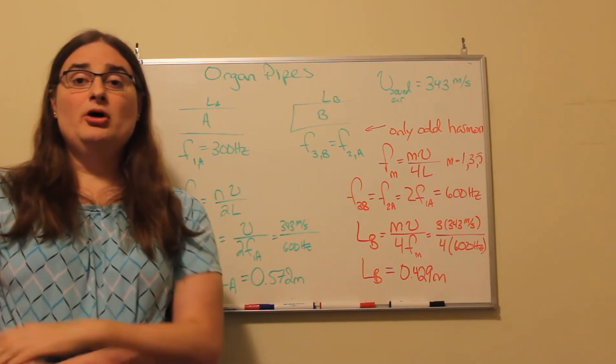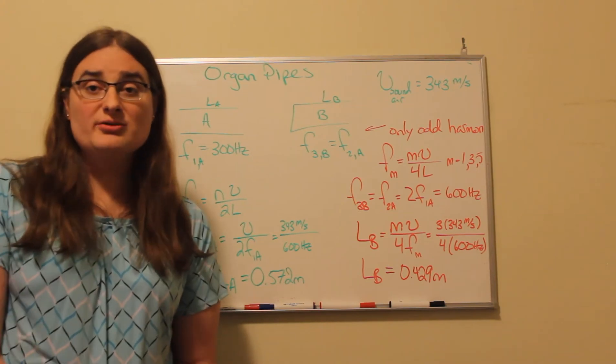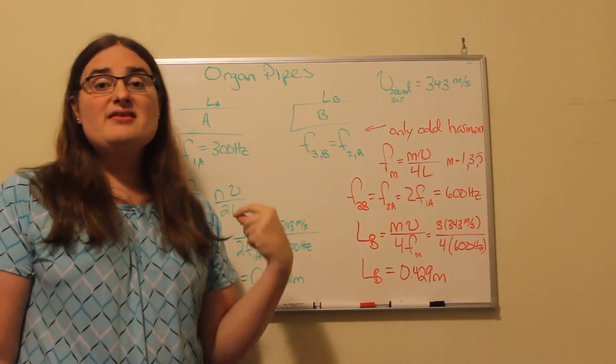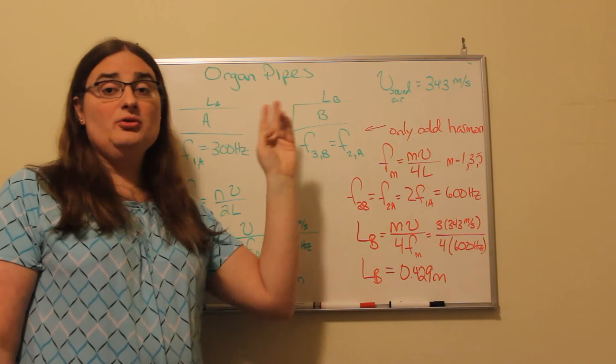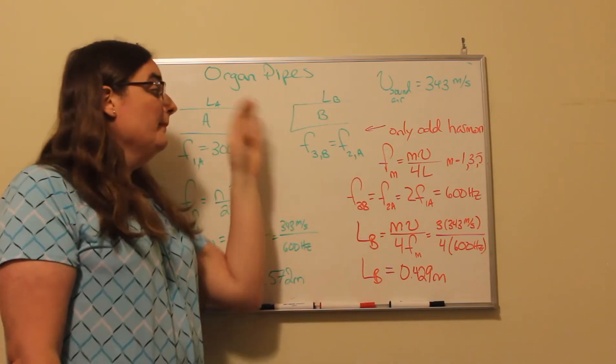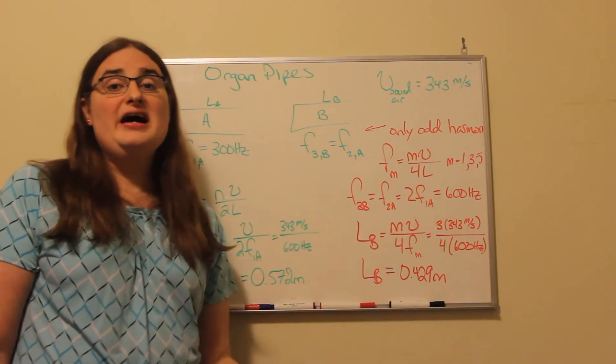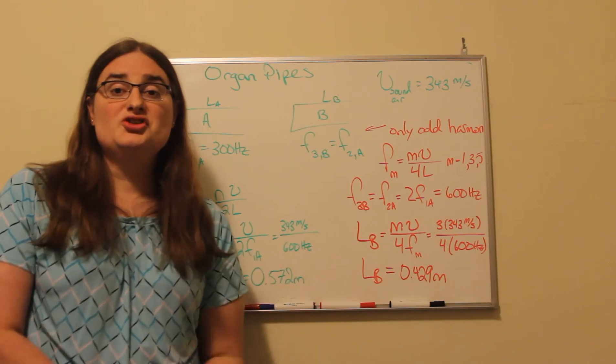Now, with open-open pipes, all possible harmonics are allowed. We could multiply any integer by our fundamental frequency, and we would see a resonance. With an open-closed pipe, we have only odd harmonics. So we couldn't get a second harmonic, we couldn't get a fourth harmonic, but in addition to the fundamental, we'd have a third, a fifth, a seventh - all of the odd harmonics are possible in an open-closed pipe.